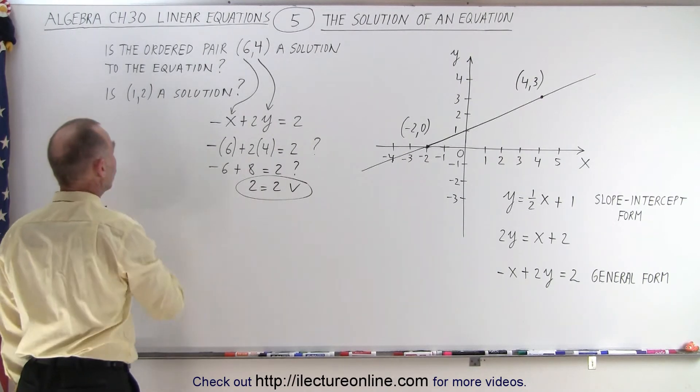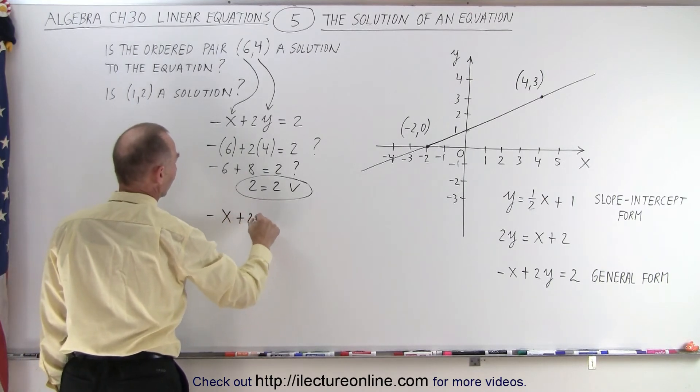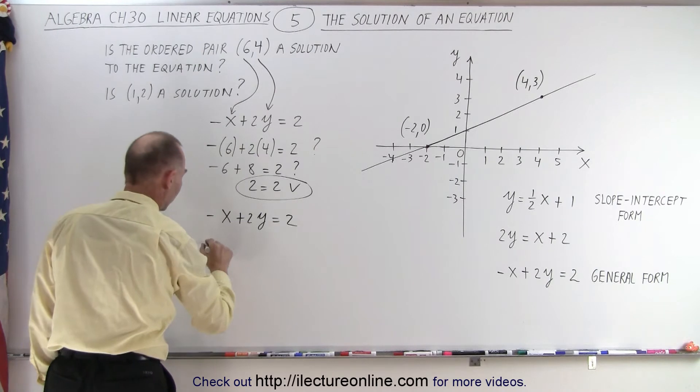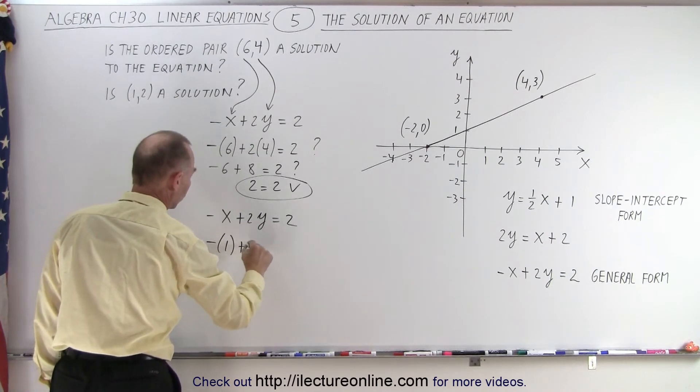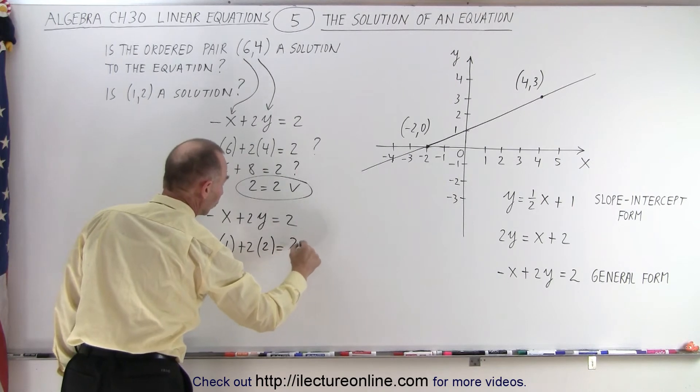Let's try our next point, 1 and 2. So again, let's write down the equation: -x + 2y = 2. We plug in 1 for x, so we get -1 plus 2 times—we plug in 2 for y. And is that equal to 2?